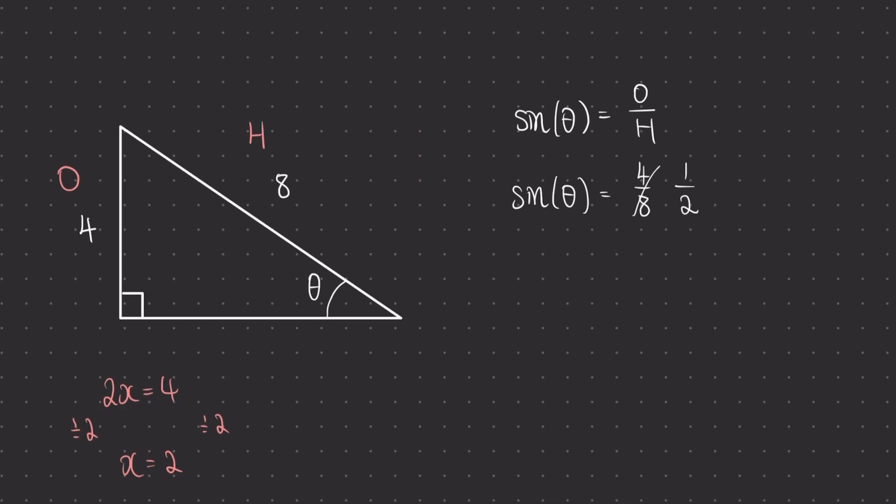For example, if I had x squared equals 4, I would square root both sides. Okay, to get x is plus or minus 2. Square rooting is the inverse operation of x squared.